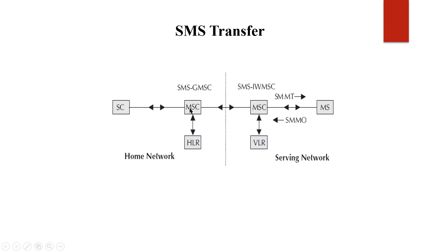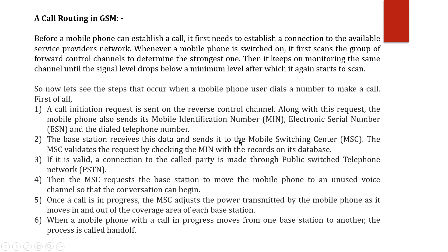From the mobile station to outside destinations, you use SMMO, and signals coming into the mobile station are handled by SMMT. In the serving network, the VLR is a dynamic database which stores the dynamic address for the mobile station, identifies the mobile station, and accepts incoming signals via SMMT. If you want to transmit outgoing messages, the SMMO signal is sent along with the mobile station to the MSC. This is how the SMS system works.